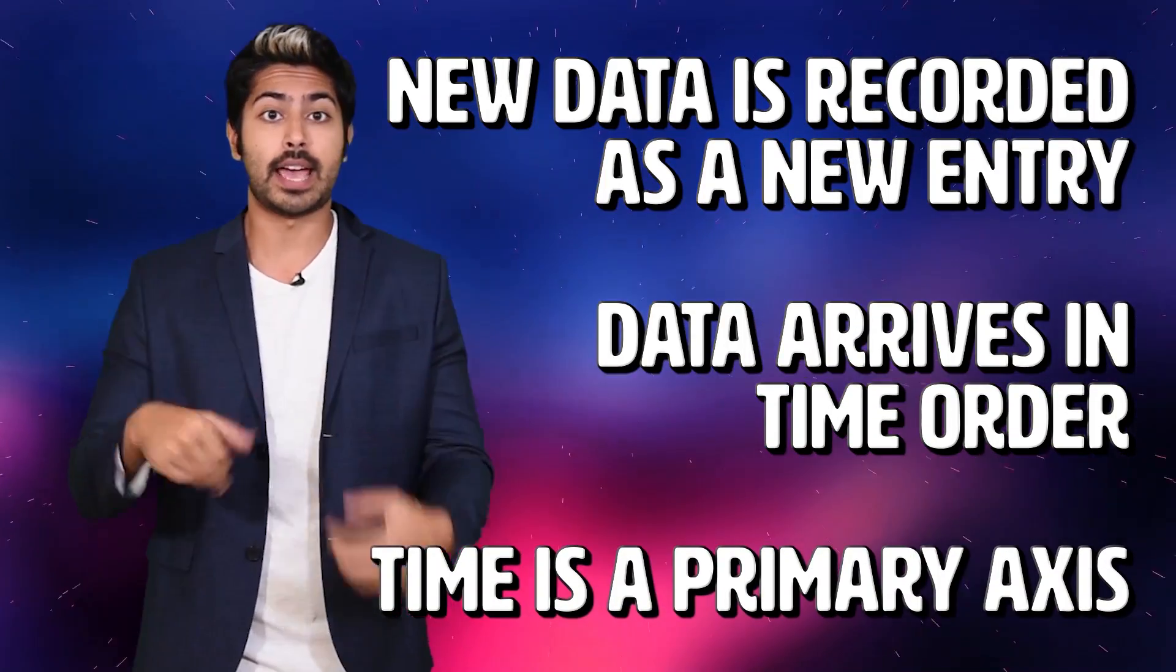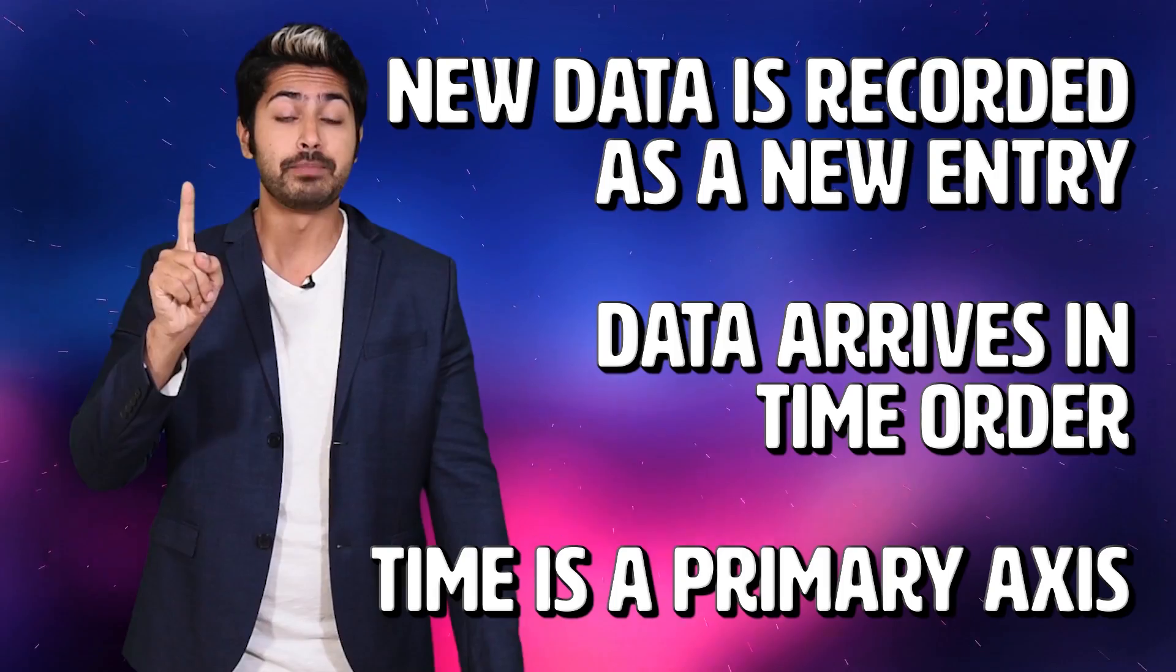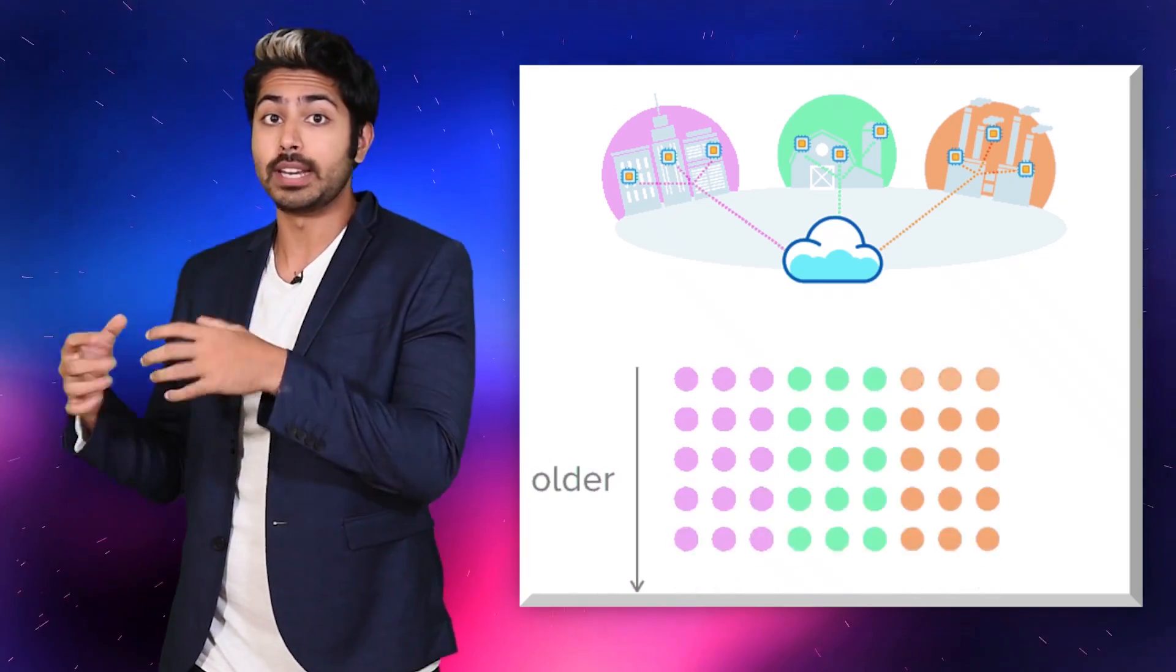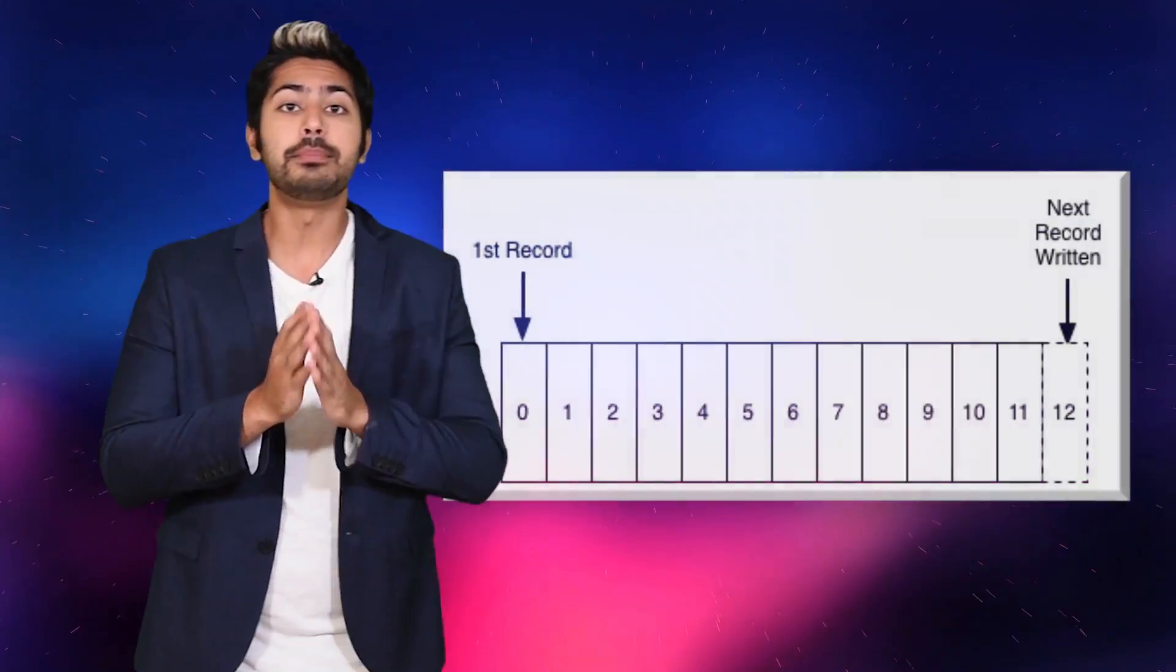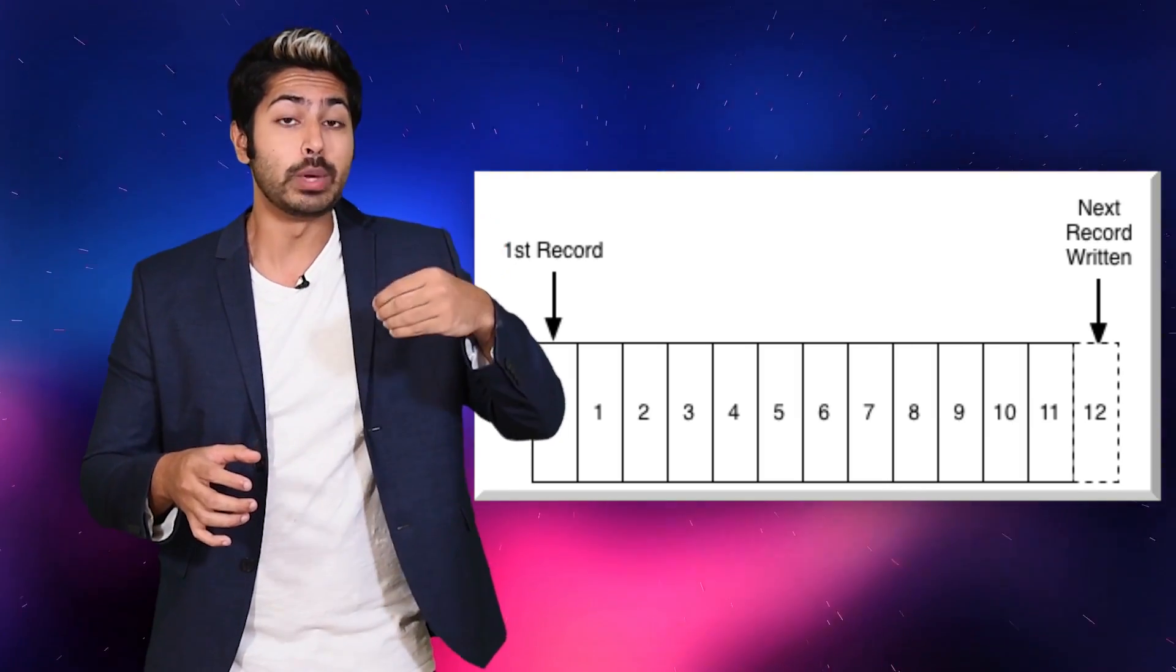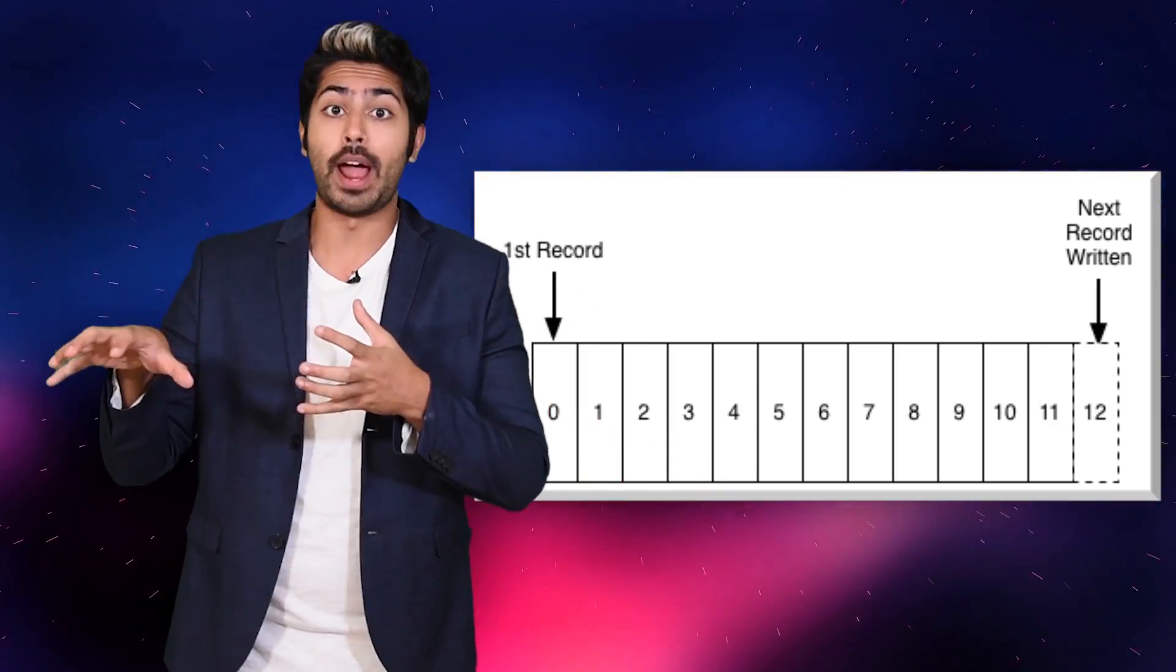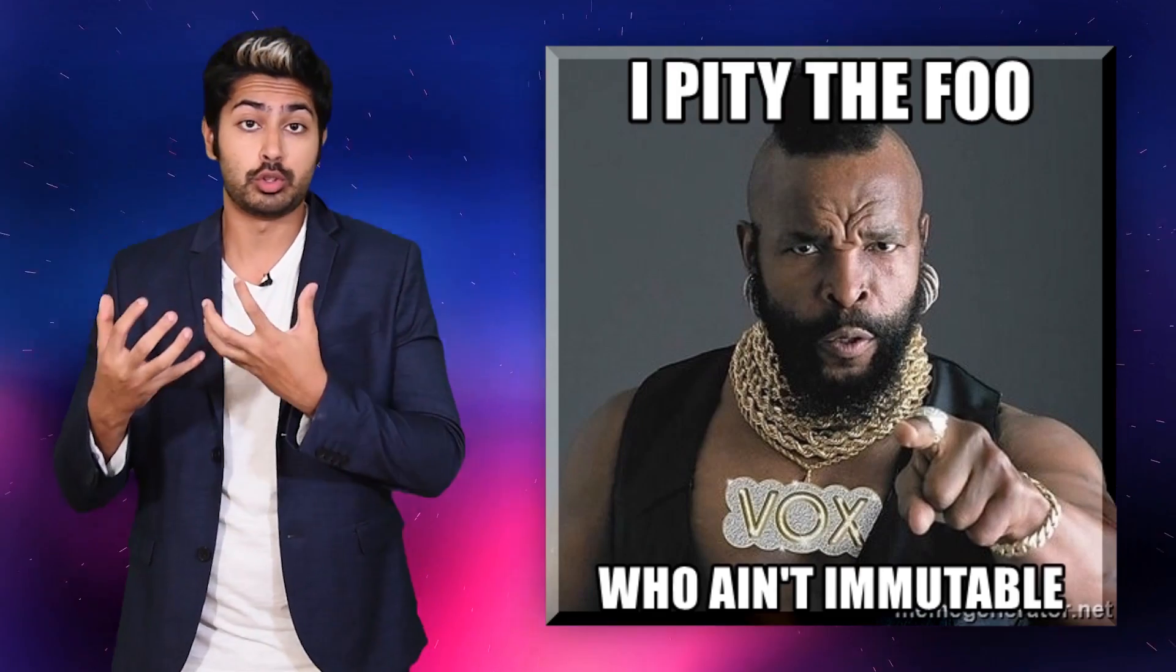Usually time series data sets have three commonalities. The data that does arrive is recorded as a new entry, it arrives in time order, and time is a primary axis. These data sets are generally append only. The data that has been recorded doesn't change since it was recorded at some point in the past. Time series data sets are different than just having a time field as a column in a data set in that when we collect a new data point for time series data, we have to create a brand new row for it. We can't overwrite what happened before. Only by doing this will we be able to track all changes to a system over time.